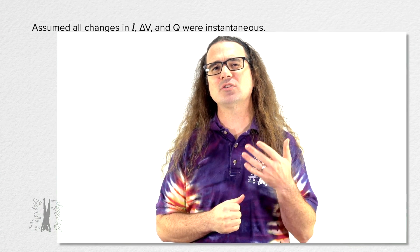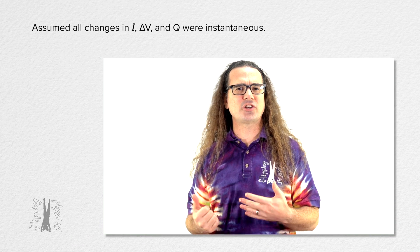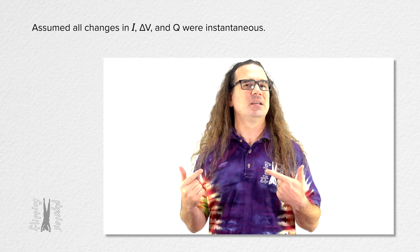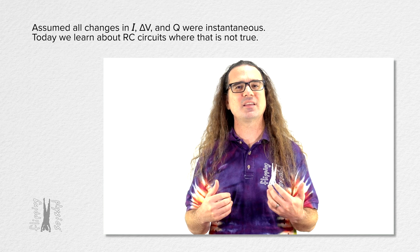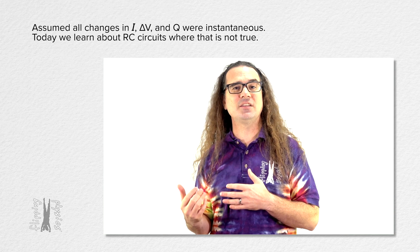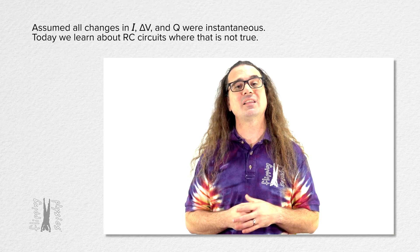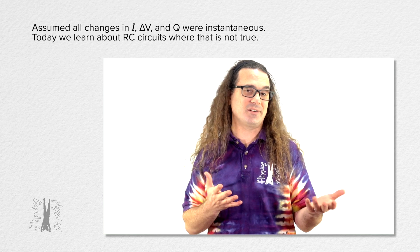Good morning. Up until this point, we have assumed all changes in electric current, electric potential difference, and charge on capacitor plates were instantaneous. Today, we put a resistor and a capacitor together in an electric circuit and learn how those variables change as functions of time. This is called an RC circuit because it is a resistor and a capacitor in a circuit.